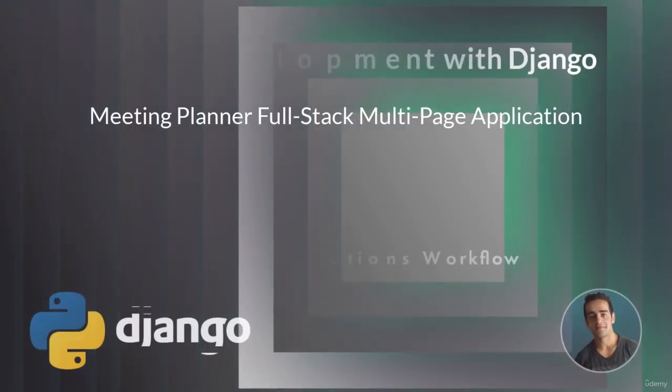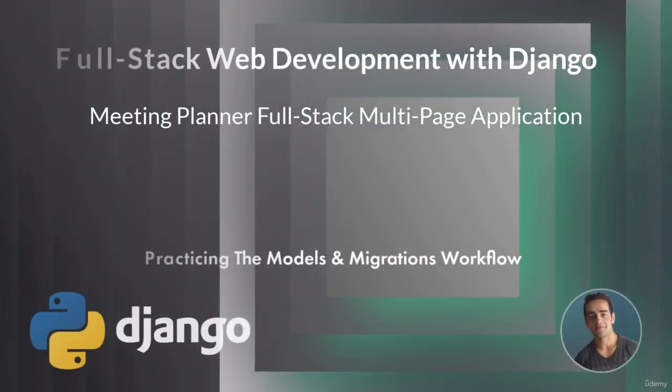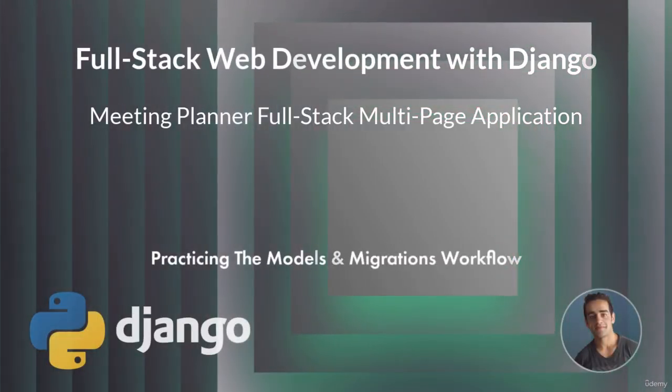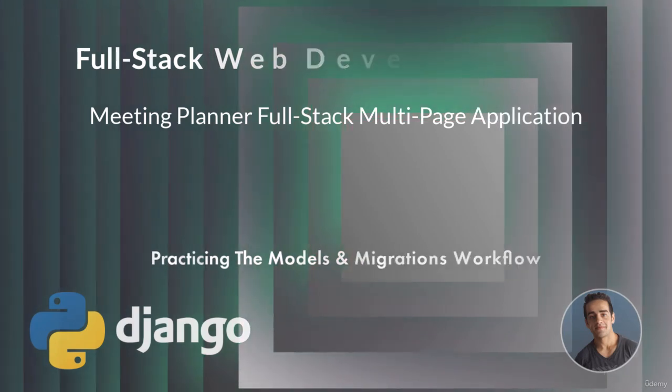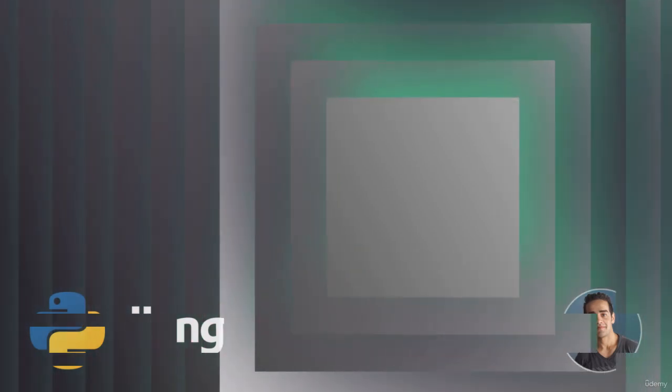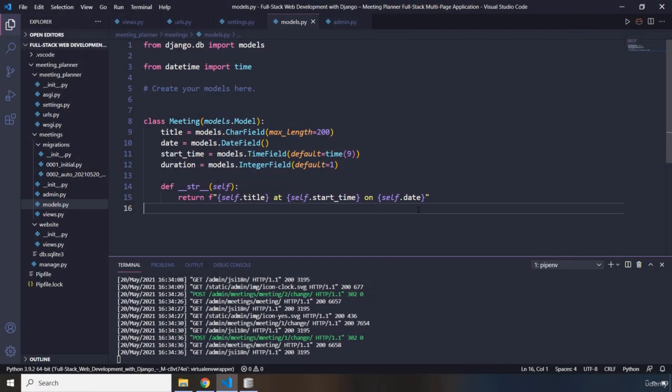Hi everyone. In this lecture we are going to practice the models and migrations workflow. The purpose of this lecture is to add another model - the Room model. We have meetings and we must have rooms, and we are going to practice this entire cycle of creating models and making migrations.